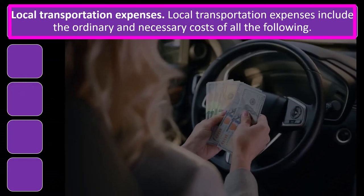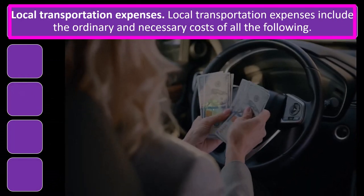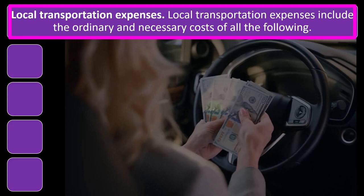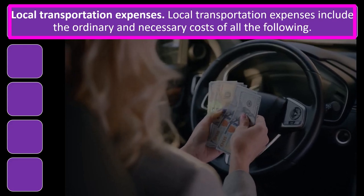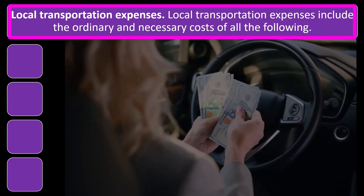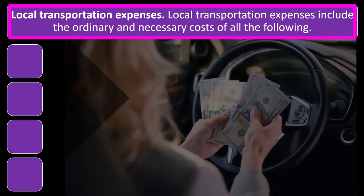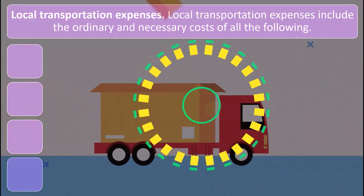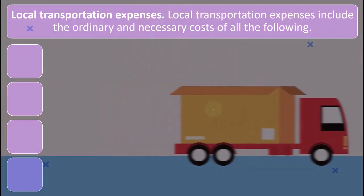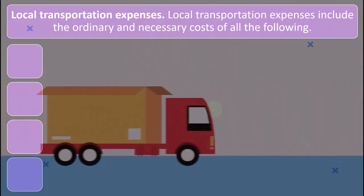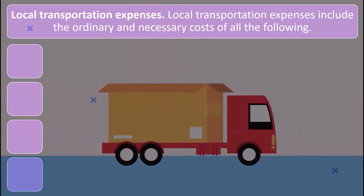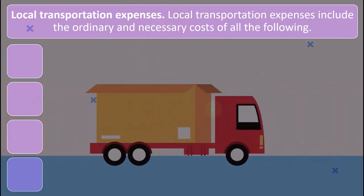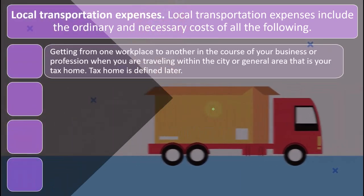Local transportation expenses include the ordinary and necessary costs of all of the following. When we're looking at deductions related to a sole proprietor Schedule C type of business, we'll often see the term ordinary and necessary for expenses, which are basically deductions on the Schedule C — those are the expenses that we needed to consume in order to help us generate the revenue.